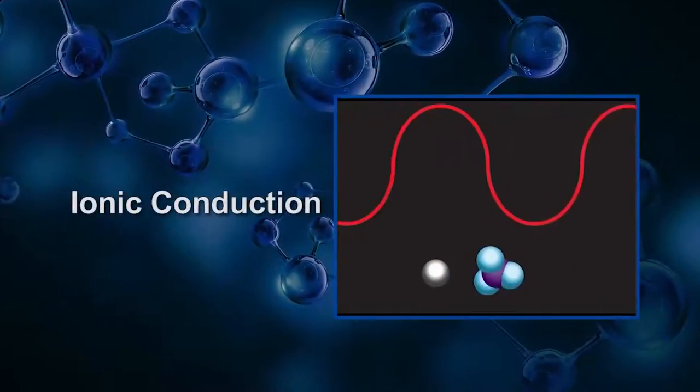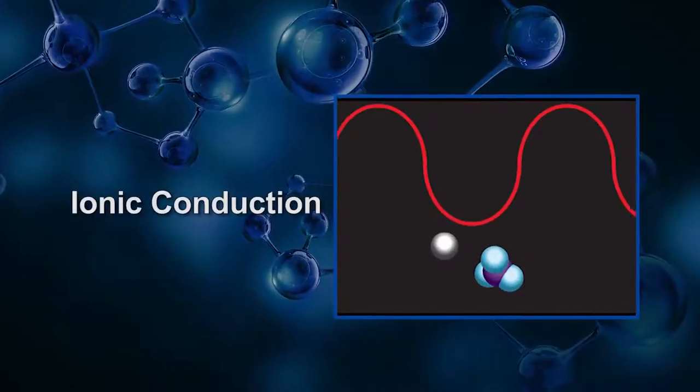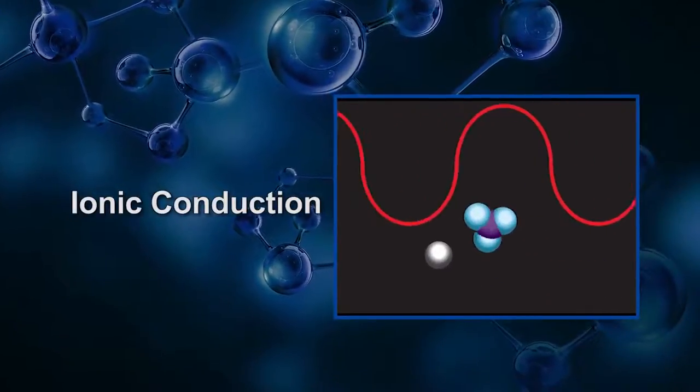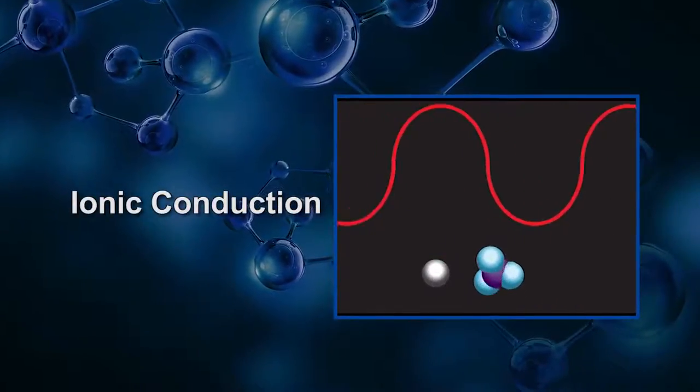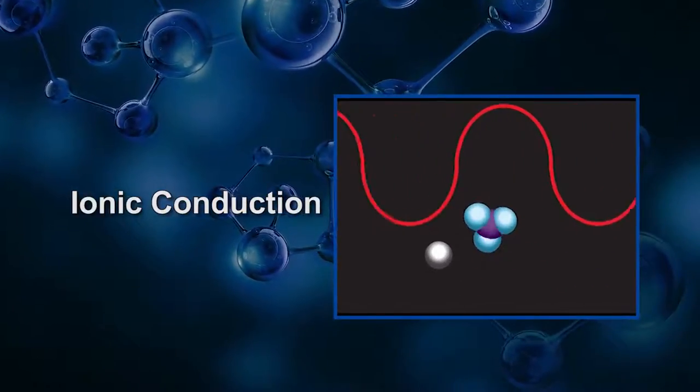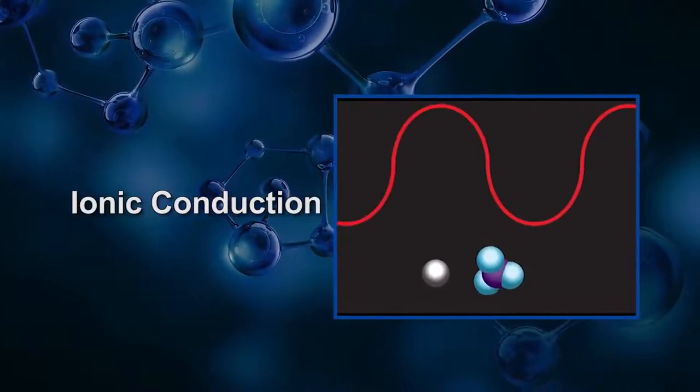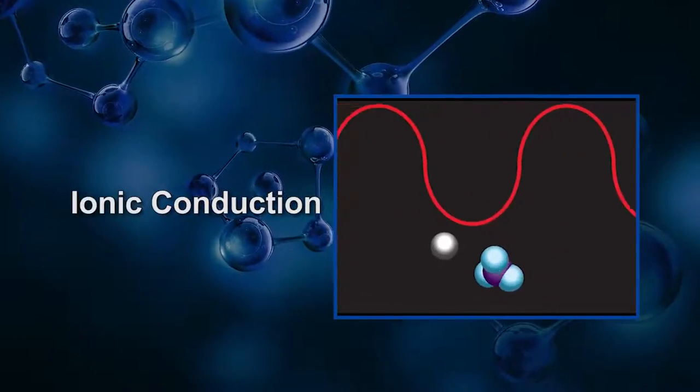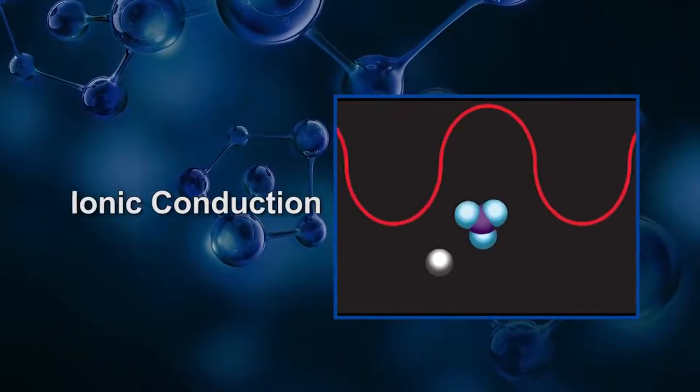This next animation shows how a solution of ions interacts with microwave energy. Here you see two ions in solution as they attempt to align themselves with the incident electric field, similar to the behavior of the molecules in the previous animation. This heating through molecular friction is an example of ionic conduction.